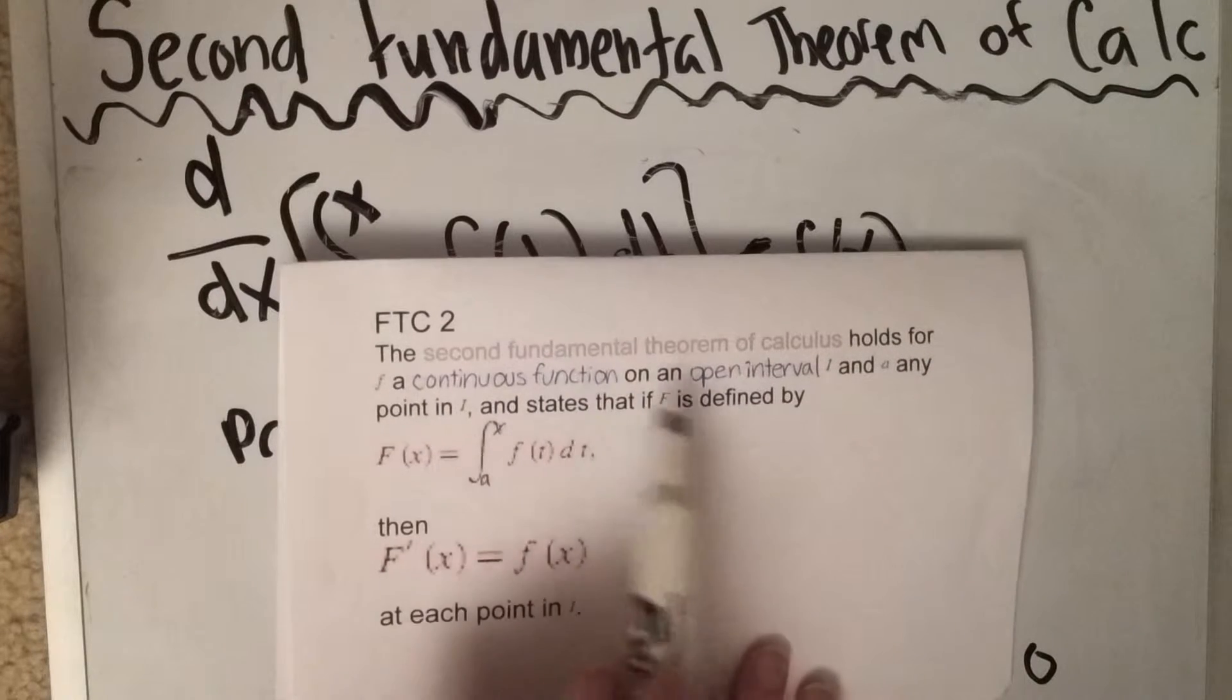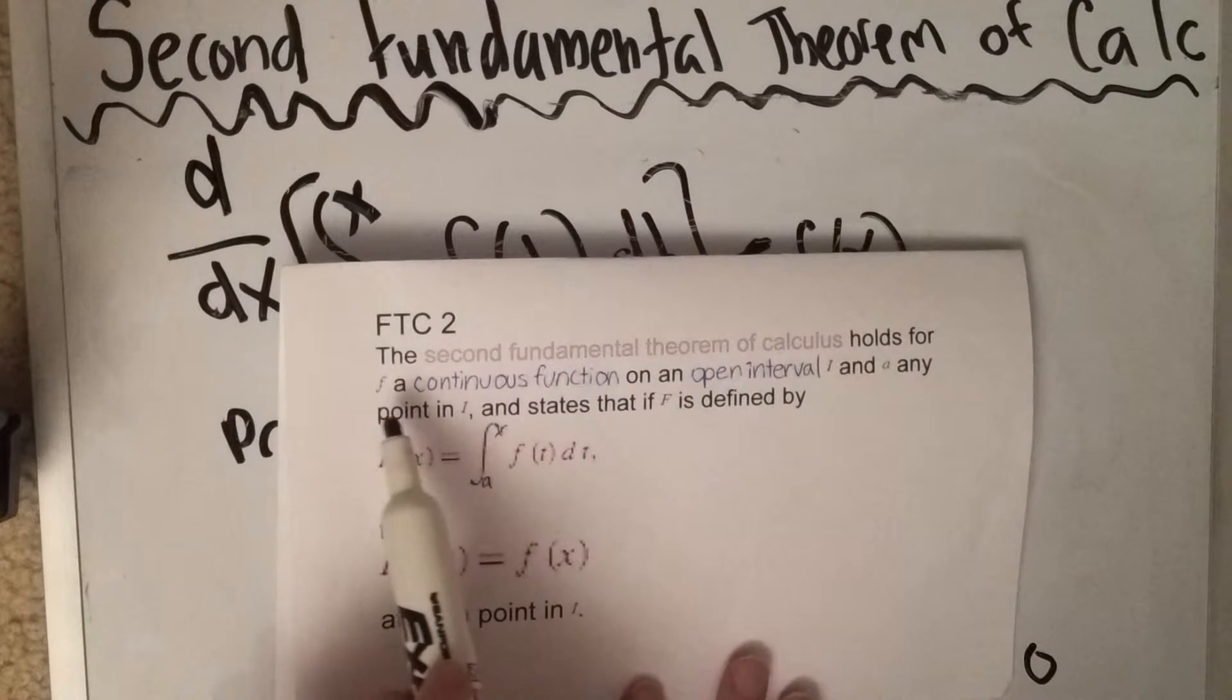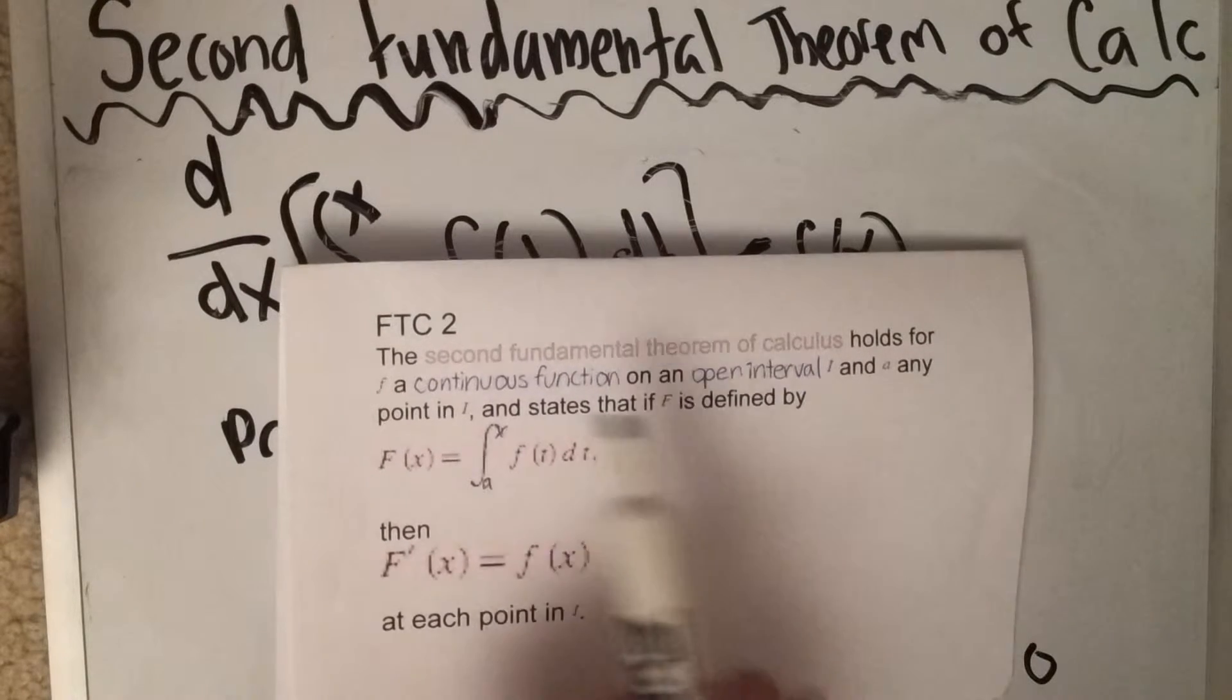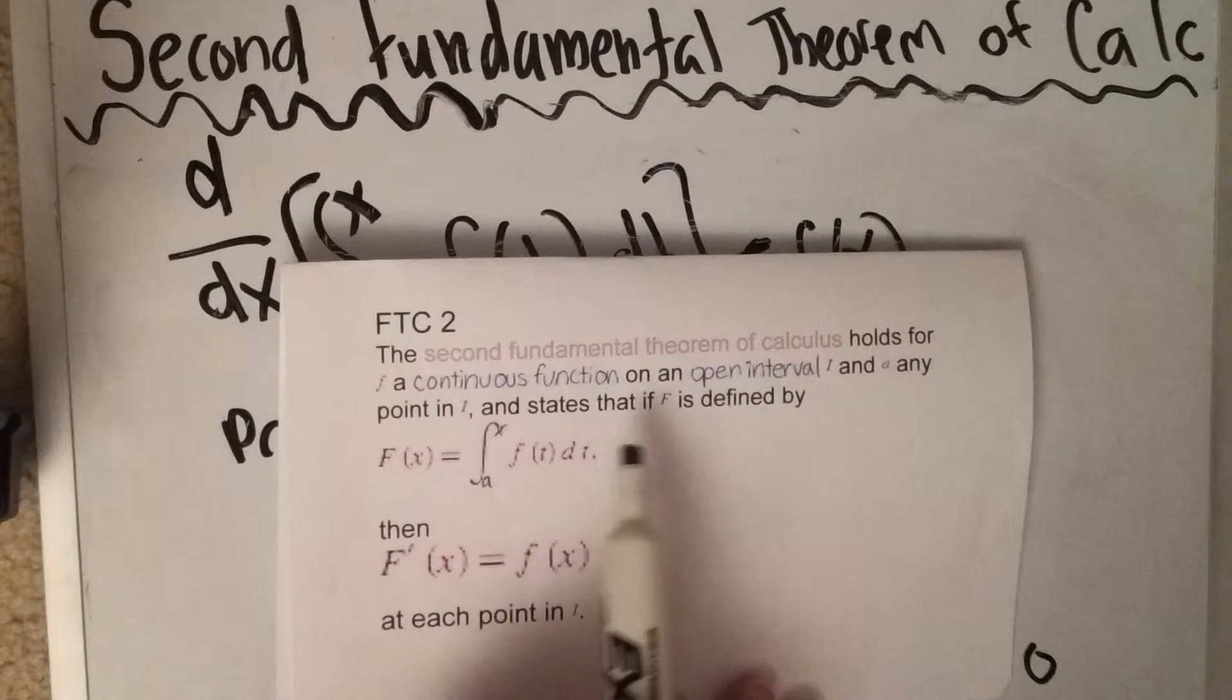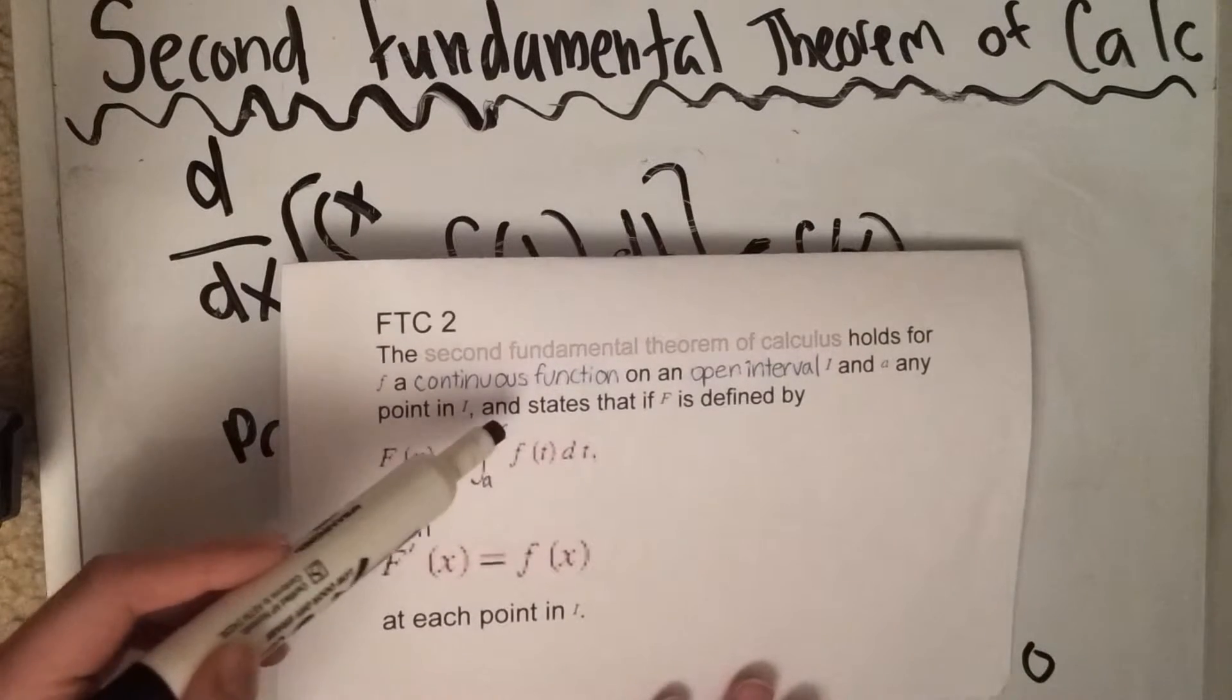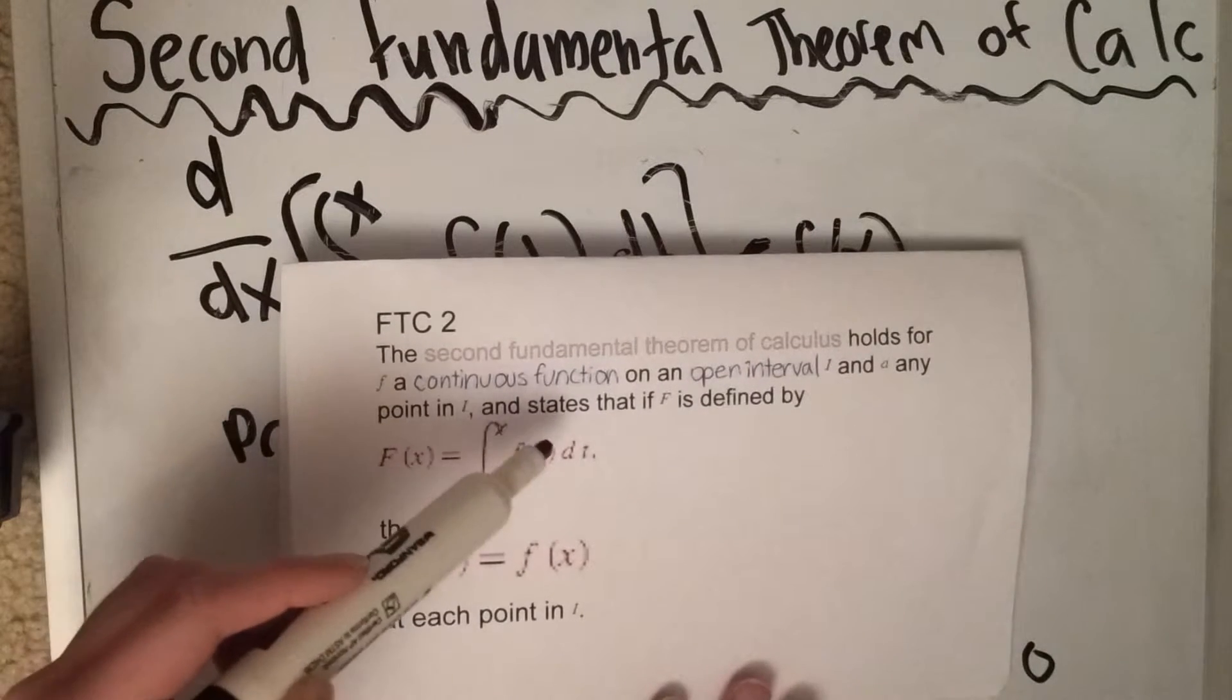So FTC2 states that for f on a continuous function and on an open interval i and a any point in i, if big F is defined by big F of x equals the integral from a to x little f of t dt,